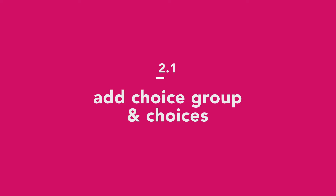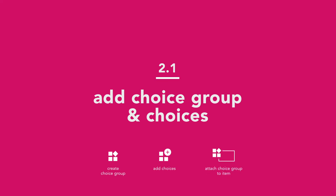To create choice groups and choices for your item, you'll need these steps. First, create a choice group. Second, add choices to the choice group. Last, attach the choice group to an item.